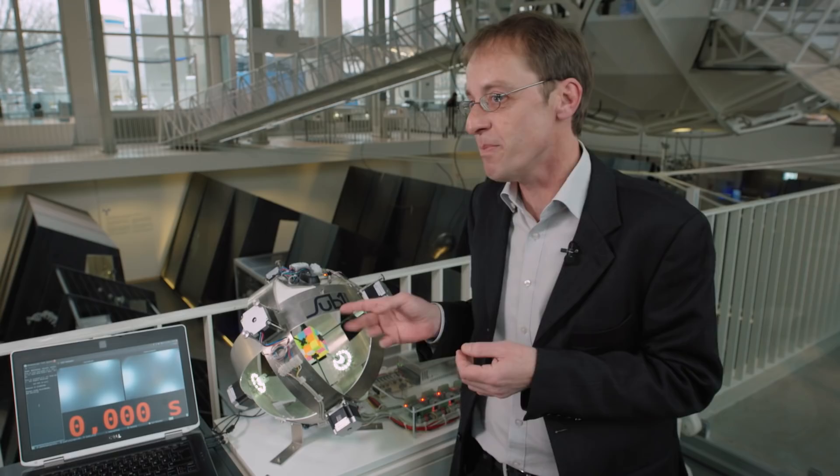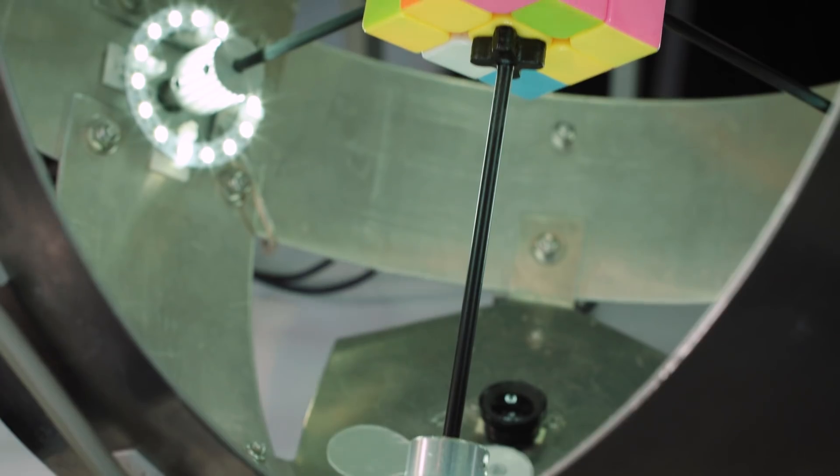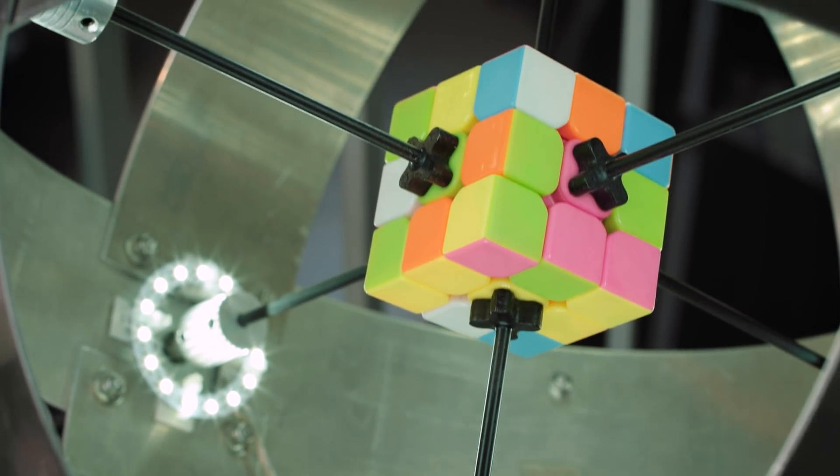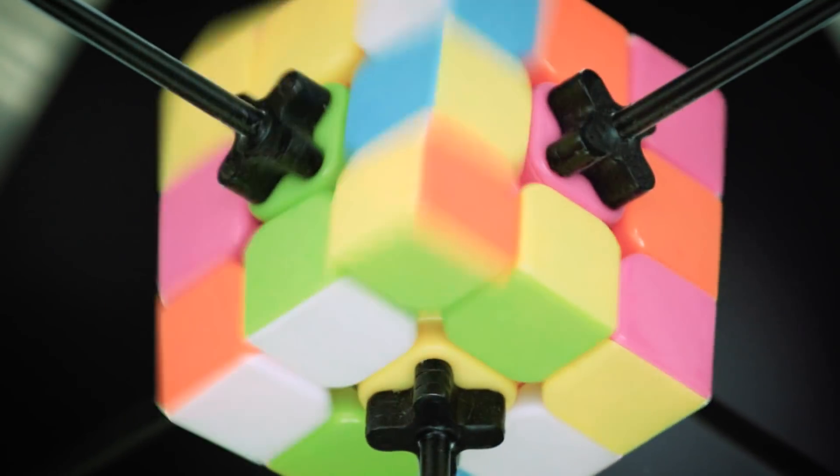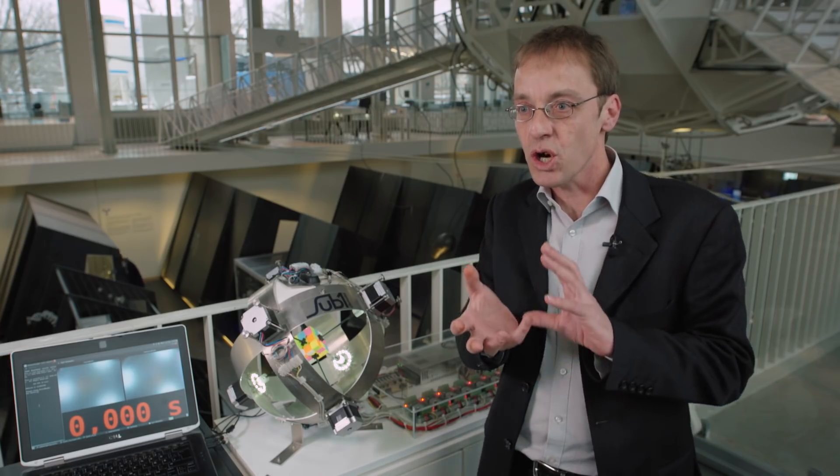He definitely does Rubik's Cube better than me. A human only has two hands and he needs one hand to hold the cube and the other one to move it around. The robot has six different possibilities to turn things around, and that makes it much faster.